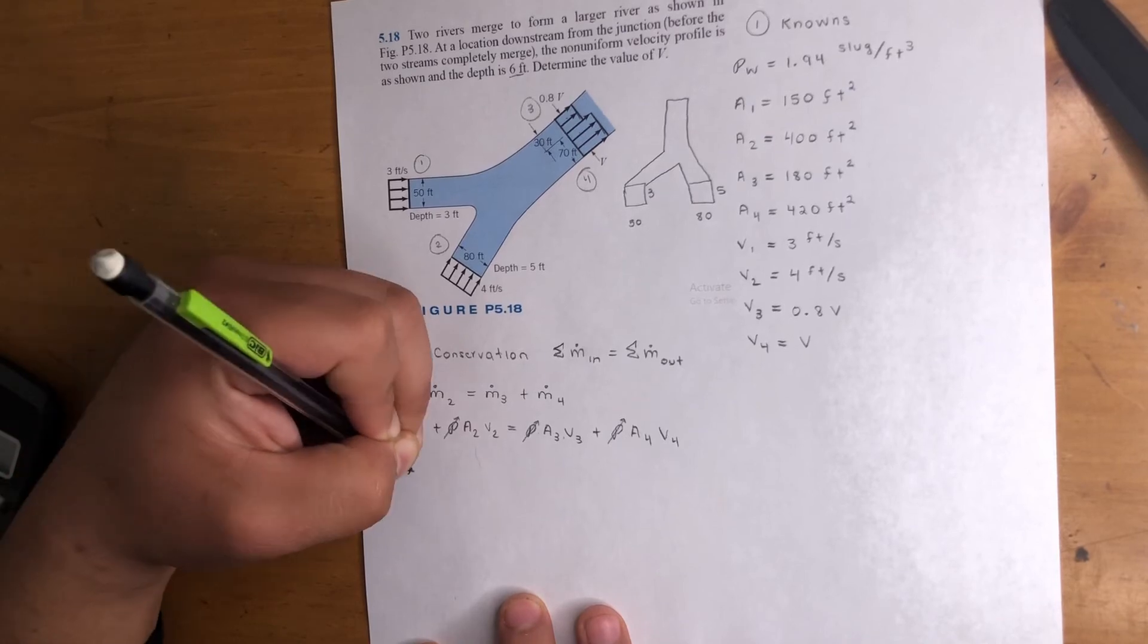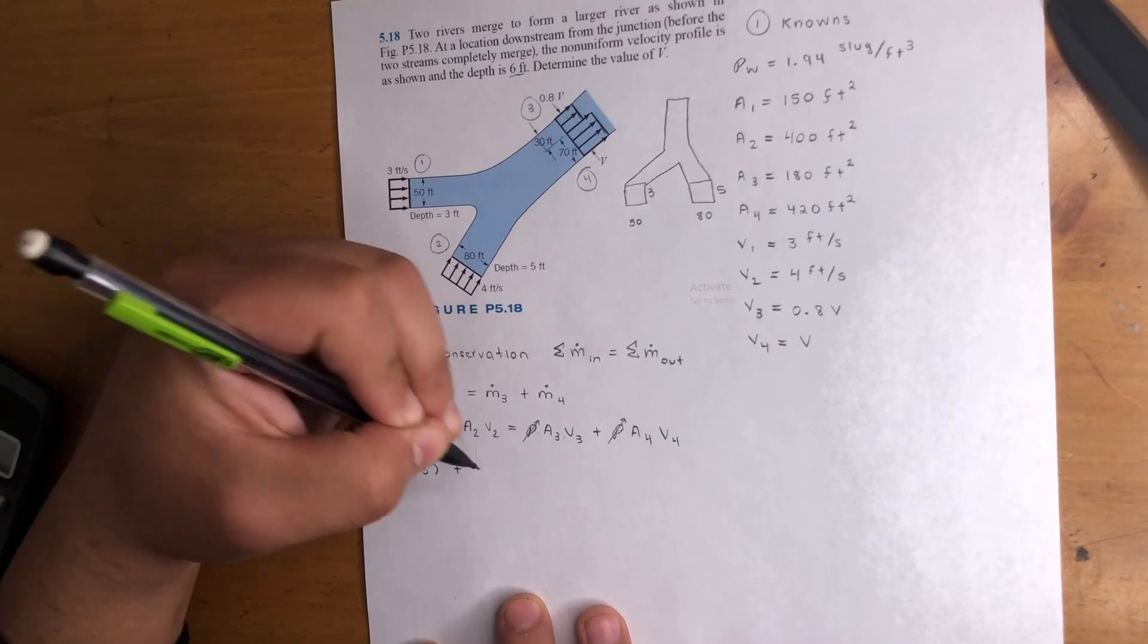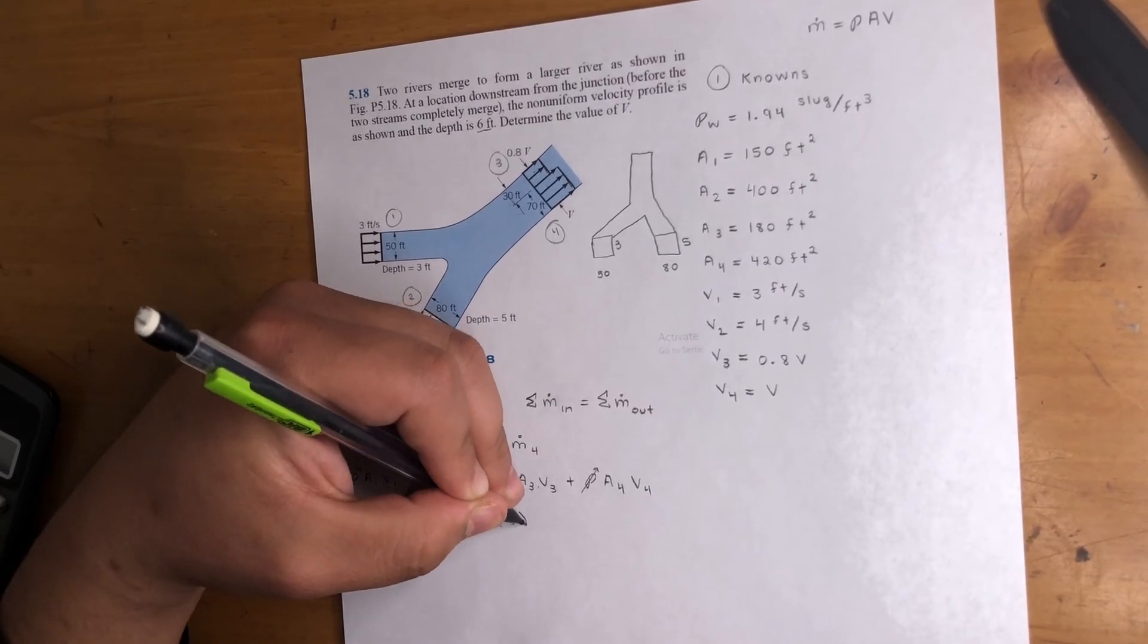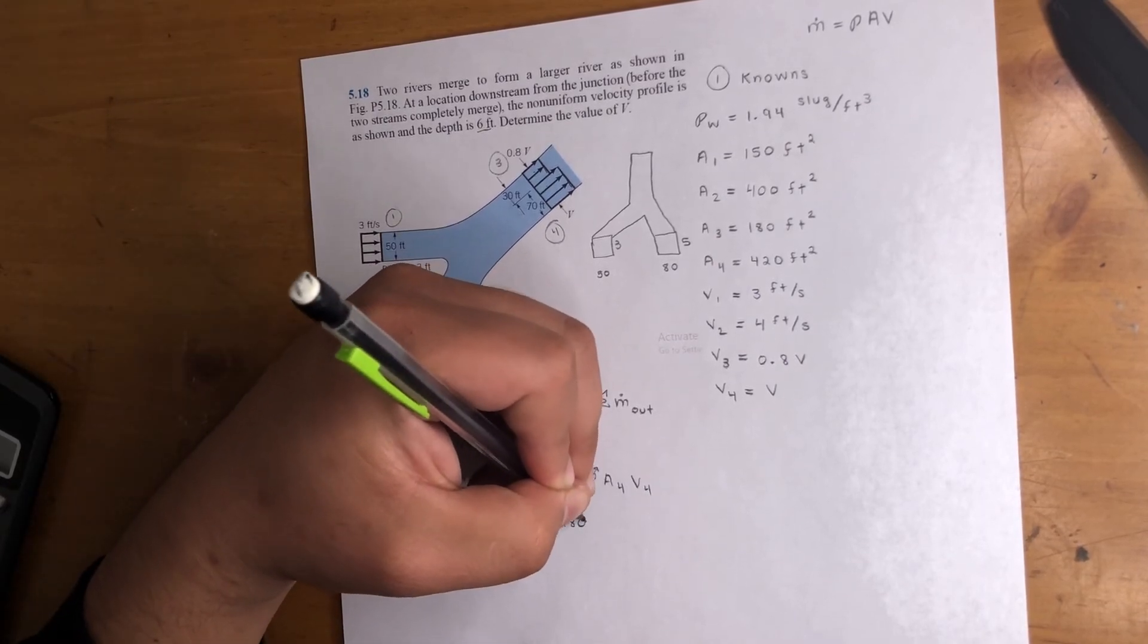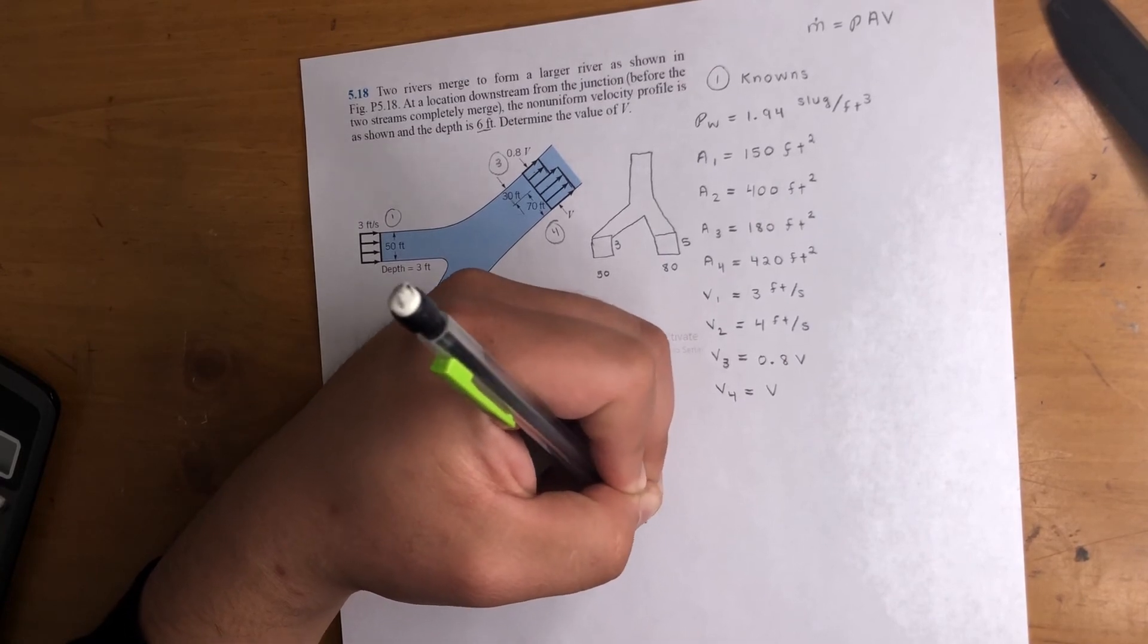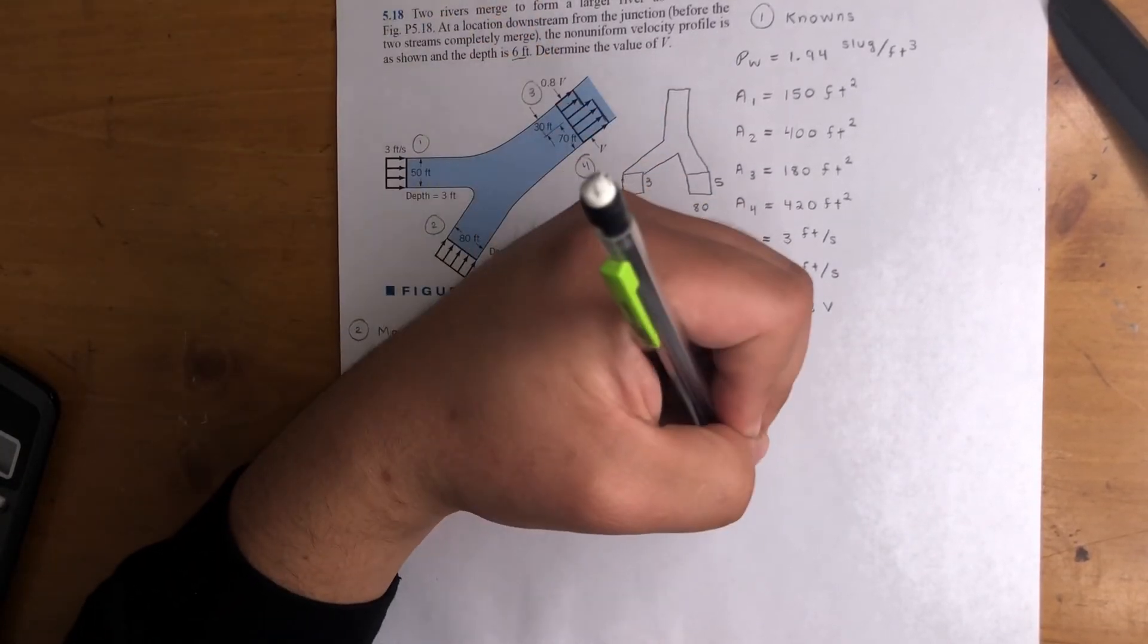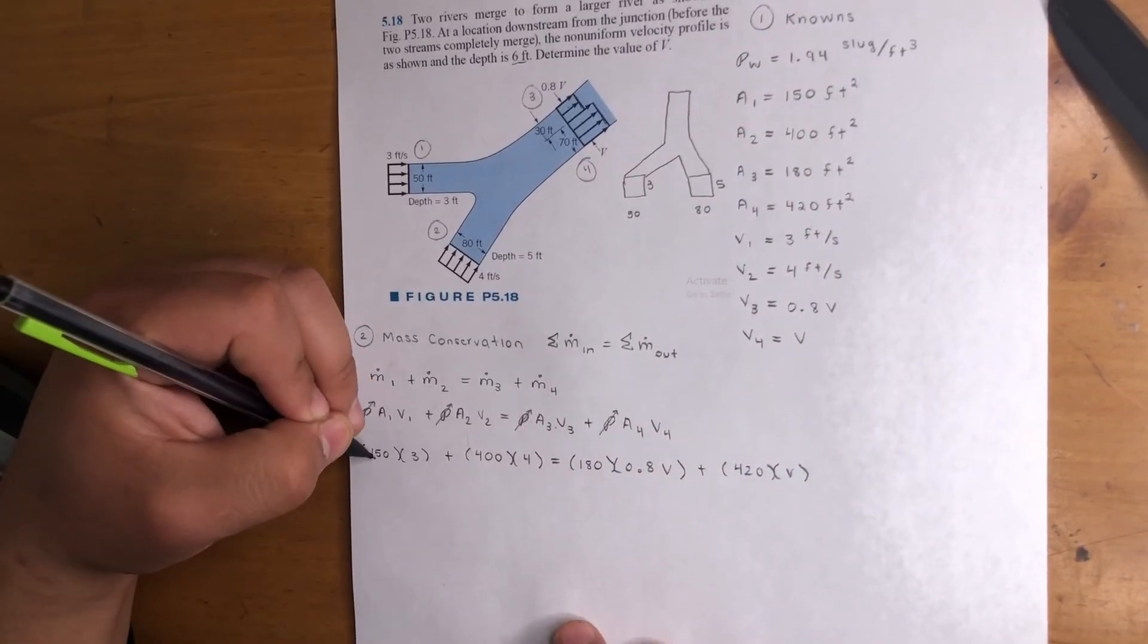Got 150 times 3, right, A1V1, plus A2, which is 400, times 4. That's V2. So A3, that is 180, V3 is 0.8V, right? That's going to be the unknown here. And then finally, A4 is 420 times V. Cool. Let's do some math.